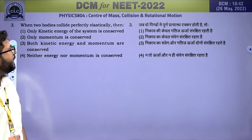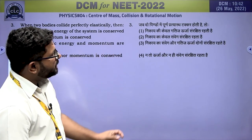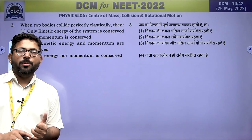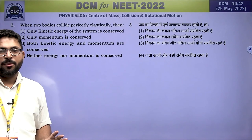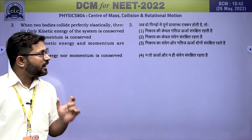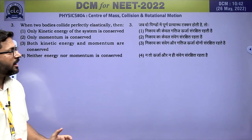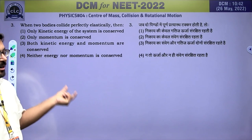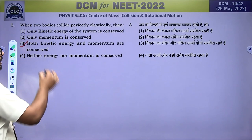When two bodies collide perfectly elastically, linear momentum is always conserved. Additionally, in an elastic collision (प्रत्यास्त टकर), the kinetic energy of the system is also conserved — unlike inelastic collisions where only momentum is conserved. So the correct answer is the third option.